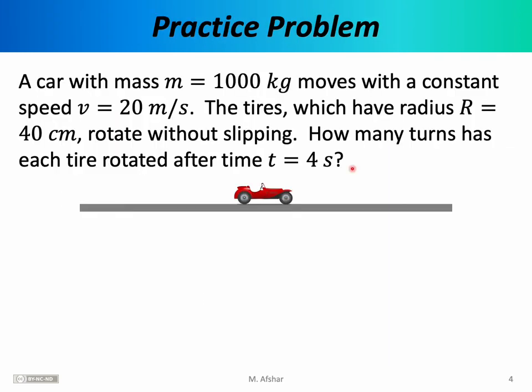As a warm-up for our study of angular motion, let's do a practice problem. A car with a mass of 1000 kilograms moves with a constant speed of 20 meters per second. The tires, which have a radius of 40 centimeters, rotate without slipping. How many turns has each tire rotated after time t equals four seconds?